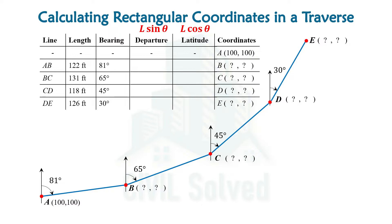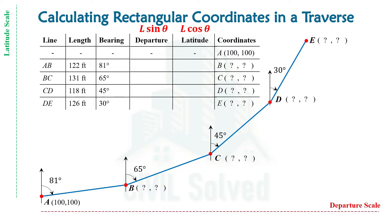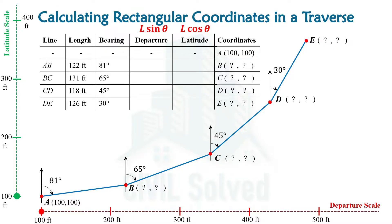In order to have a better understanding about the coordinates, let's show these coordinates with the help of a departure and latitude scale. These are the gradations on the departure and latitude scale. Initially we are at point A, and the red and green dots are shown on the departure and latitude scale to indicate the position of point A.